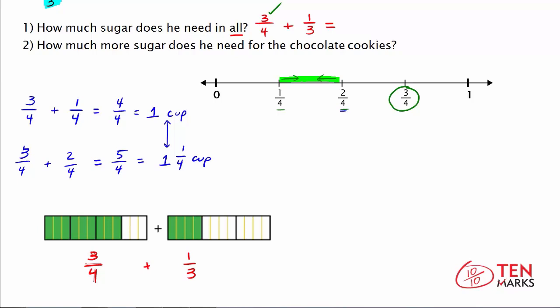In this model, each whole has been divided into 12 equal parts. Looking at the model on the left, the yellow lines show the twelfths. Counting the filled-in parts: 1, 2, 3, 4, 5, 6, 7, 8, 9 — 9 of the 12 parts are filled in. So 9 out of 12 gives us 9 twelfths.